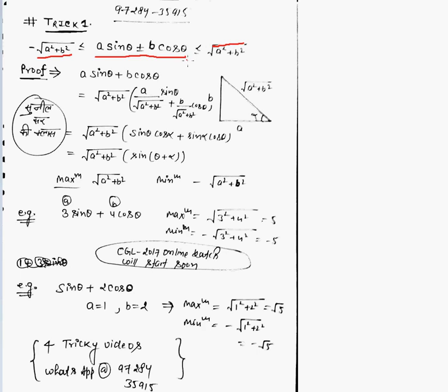First, we need not know from where this comes. For this, we make proof of this. See, a sine θ plus b cos θ, multiply and divide by root of a squared plus b squared. I assumed a triangle with base a and perpendicular b.